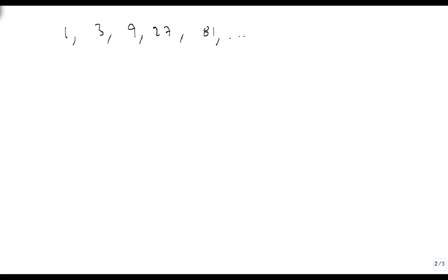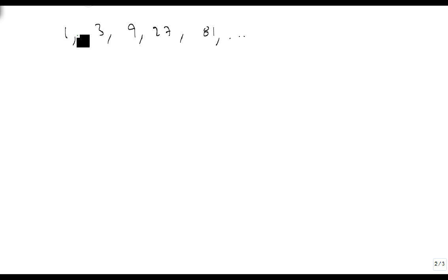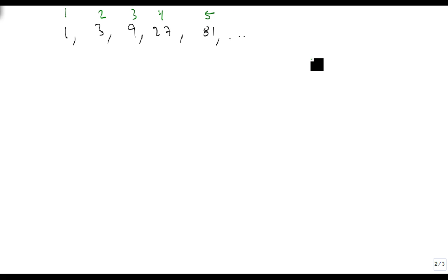We're going to start with a case where we have the sequence: 1, 3, 9, 27, 81, and so on. We enter the index numbers above: this is 1, 2, 3, 4, 5, and then all the others above it will follow the same pattern.